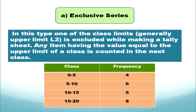The first type is exclusive series. In this type, one of the class limits — that is, the upper limit — is excluded while making a tally chart. For example in 0 to 5, the value 5 is not included while making a tally chart. Any item having a value equal to the upper limit is counted in the next class. Also, the class interval gap remains the same.